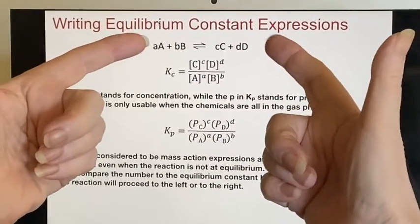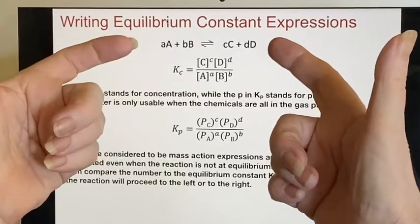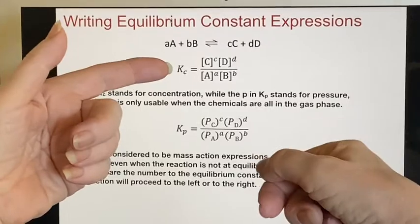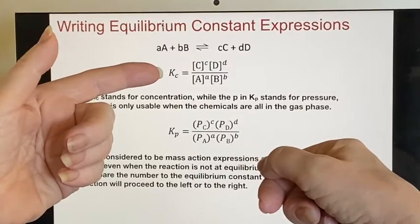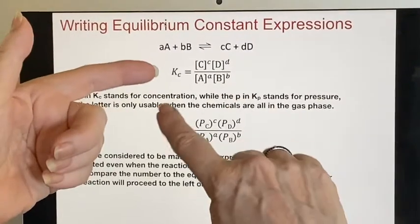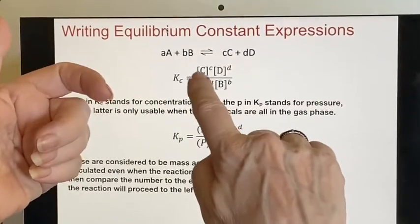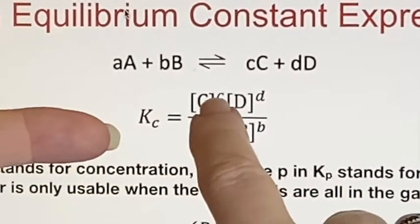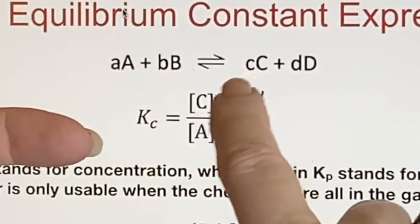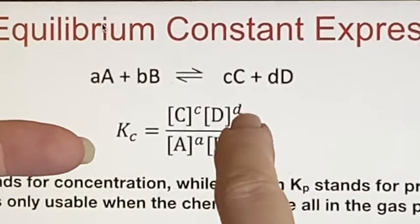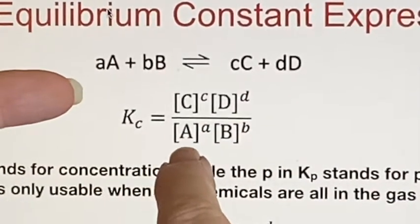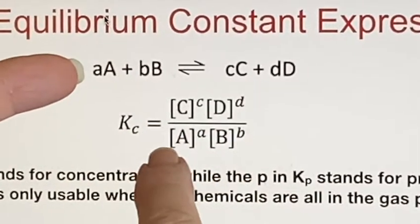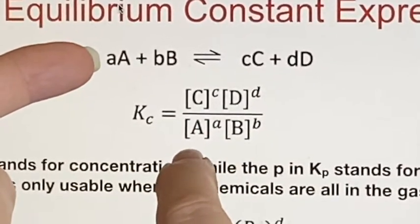But if I had this situation, here's my balanced equation, and it turned out that all of these were gases, then I would have my choice of using either K sub C or K sub P. If I wrote in the K sub C, I would do the concentrations of the two products raised to the power that is the stoichiometric coefficient in front of them over the reactants. And their concentrations also raised to the power that's the same as the stoichiometric coefficient.